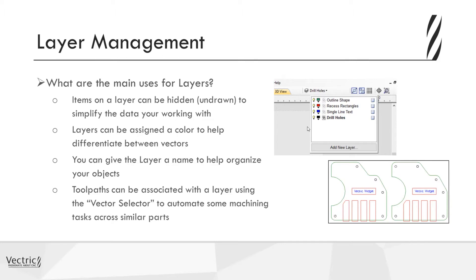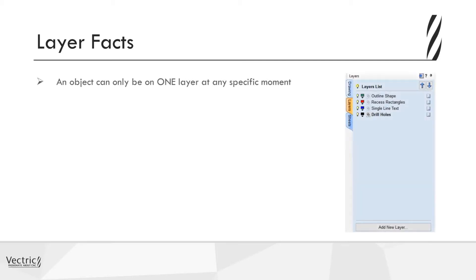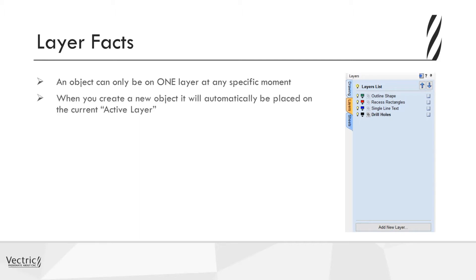Let's look at some facts about layers. An object can only be on one layer at any specific moment — a single object can only exist on one single layer. When you create a new object it will automatically be placed on the current active layer, which is identified using the bold text within your layers list.